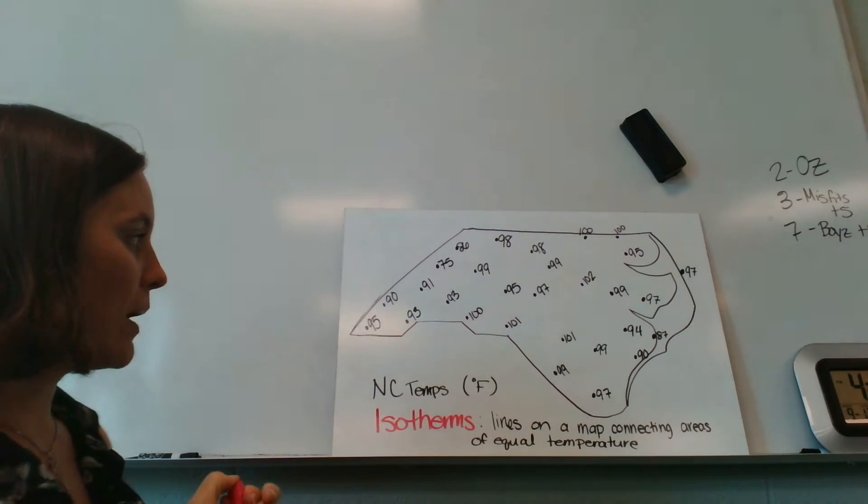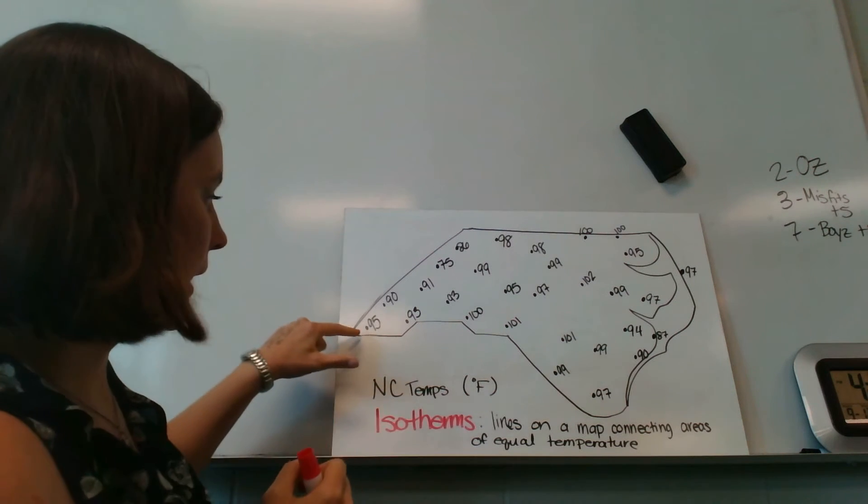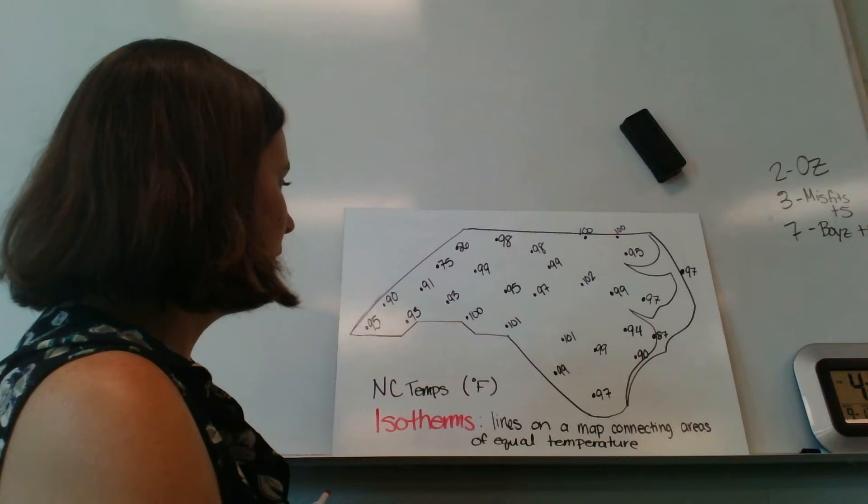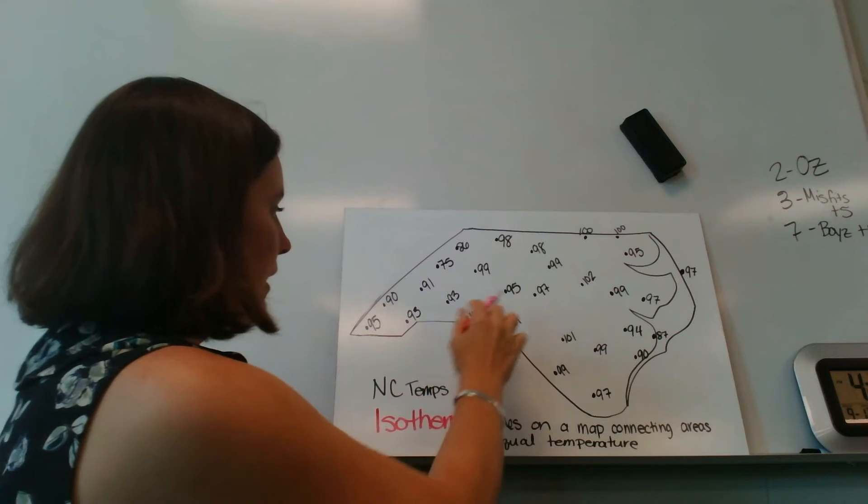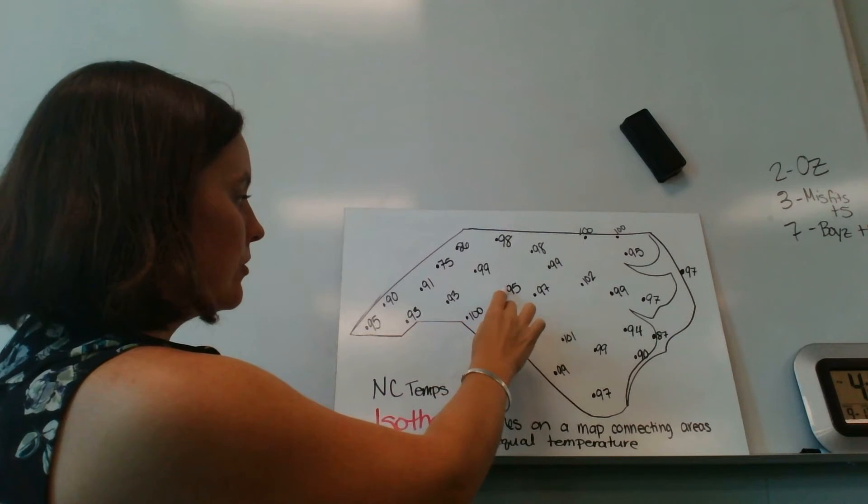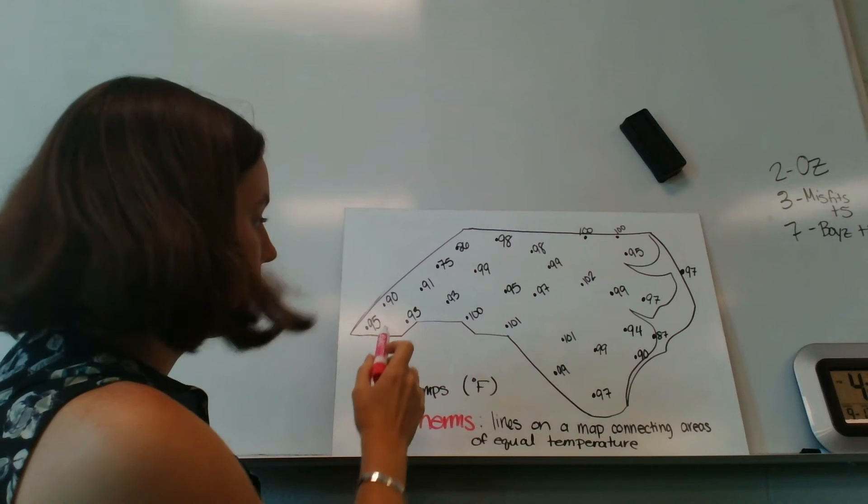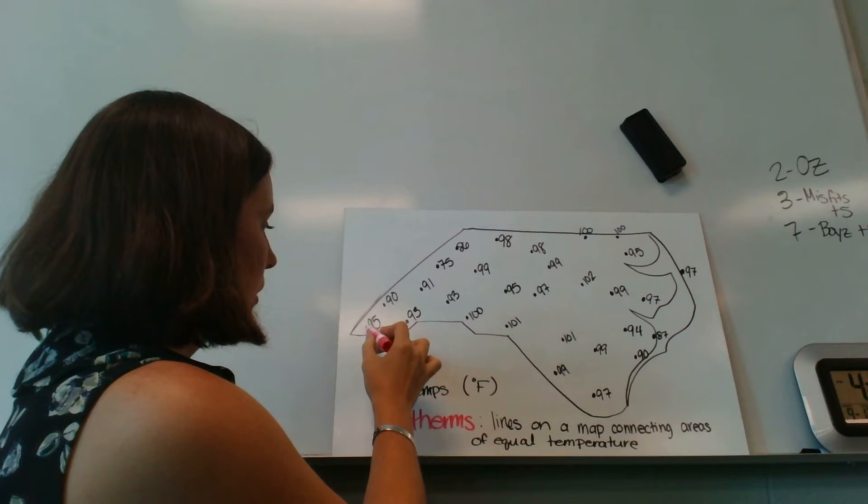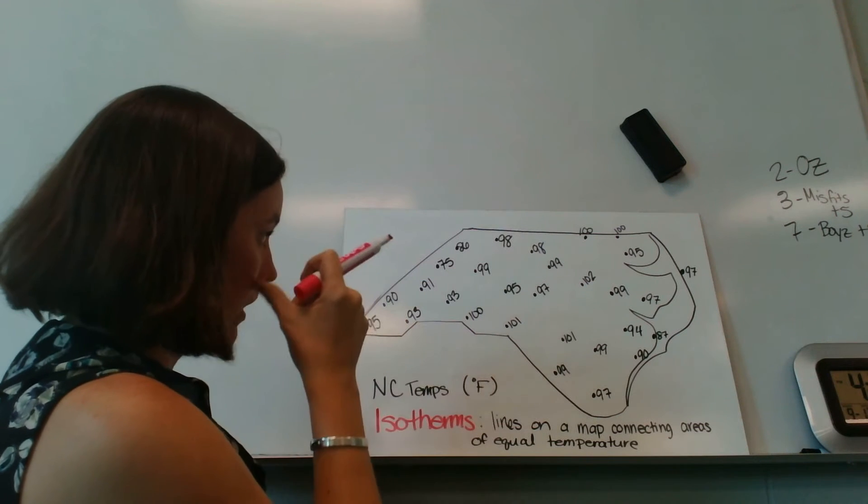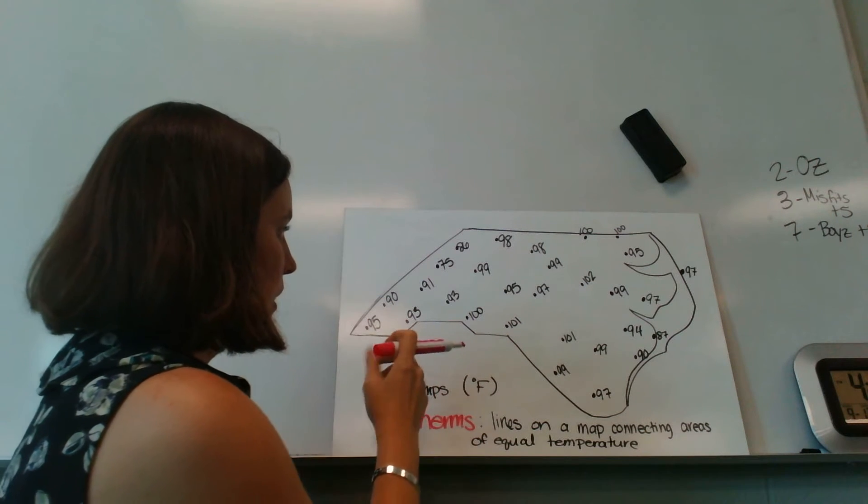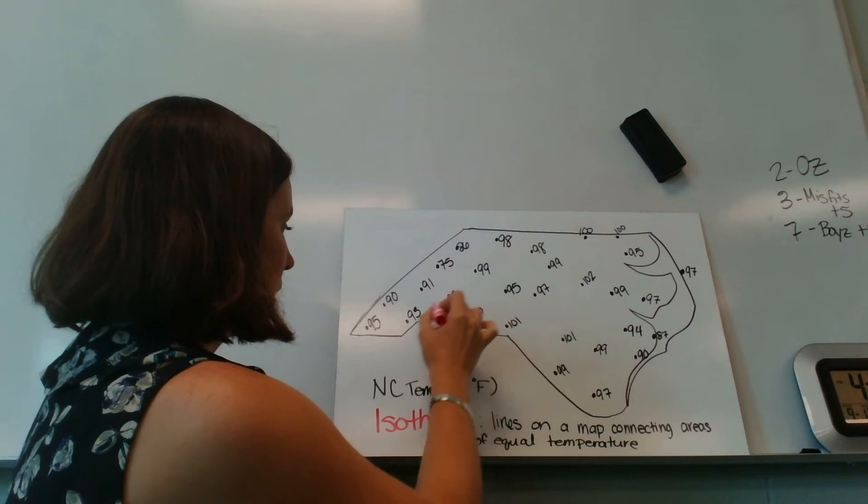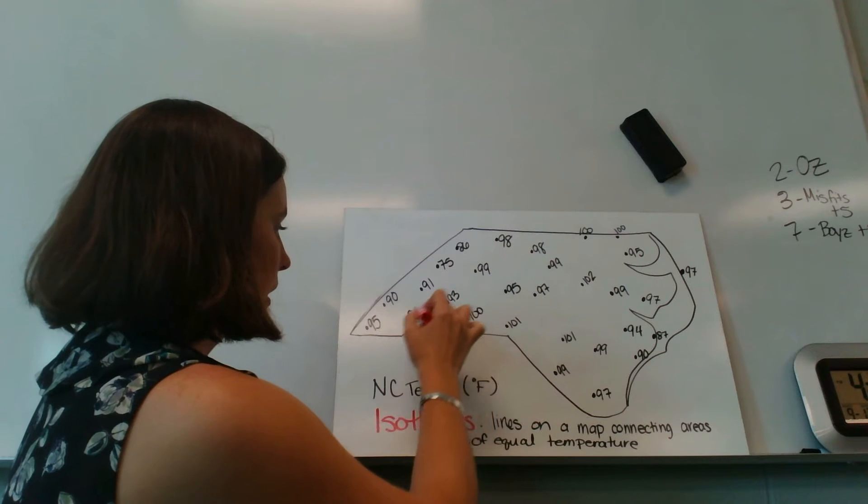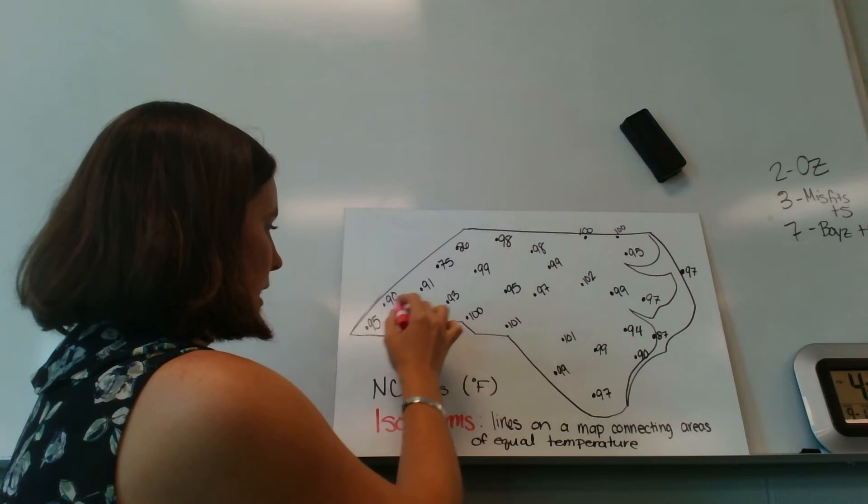I'm going to start over here in the mountains. I have a 95 degree Fahrenheit, and then the next place I have 95 is way over here. So I have to figure out how to get it over there without crossing over any other existing isotherms. So I know that there's 93, a line of 93 degrees Fahrenheit somewhere right around here, and then 90 and 91 over here.